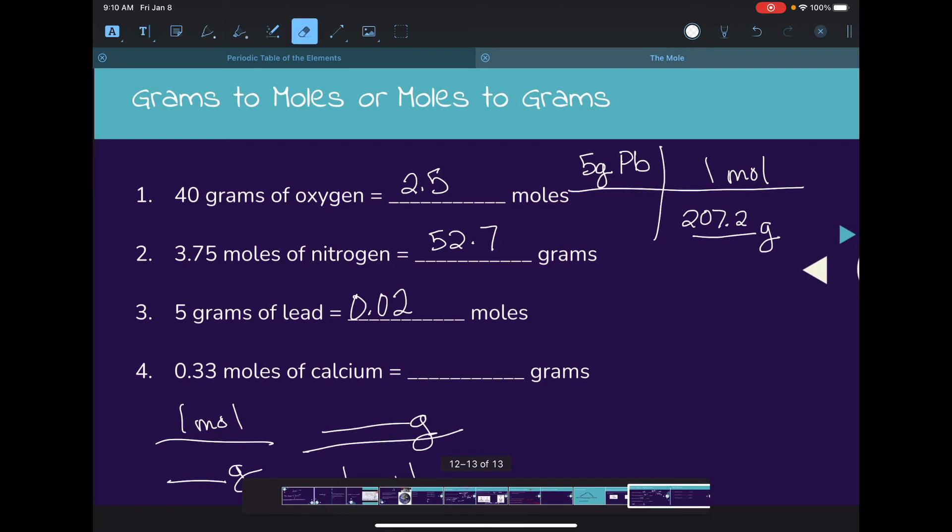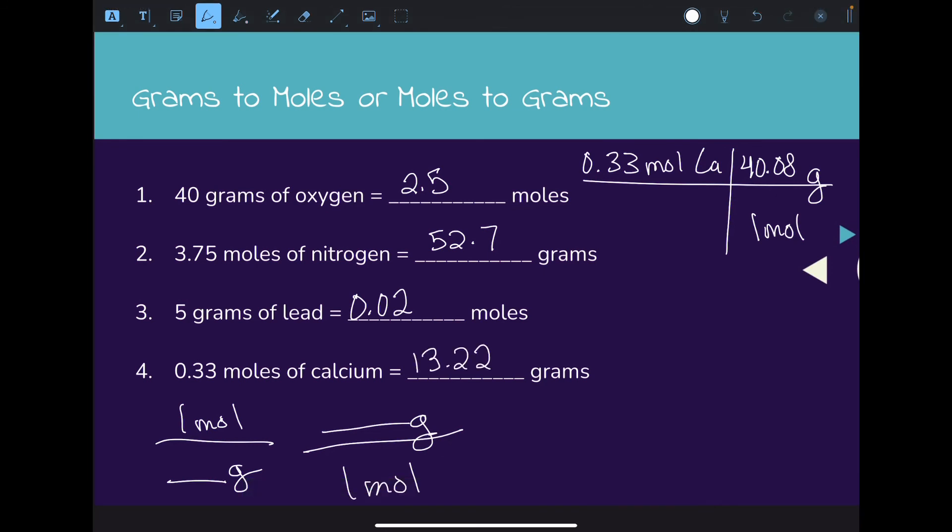The last one is calcium. We have 0.33 moles of calcium. One mole goes on the bottom, grams on top. Calcium has a molar mass of 40.08. Multiplying across the top and dividing across the bottom, we get roughly 13.22 grams. That's how you convert from grams to moles or from moles to grams.